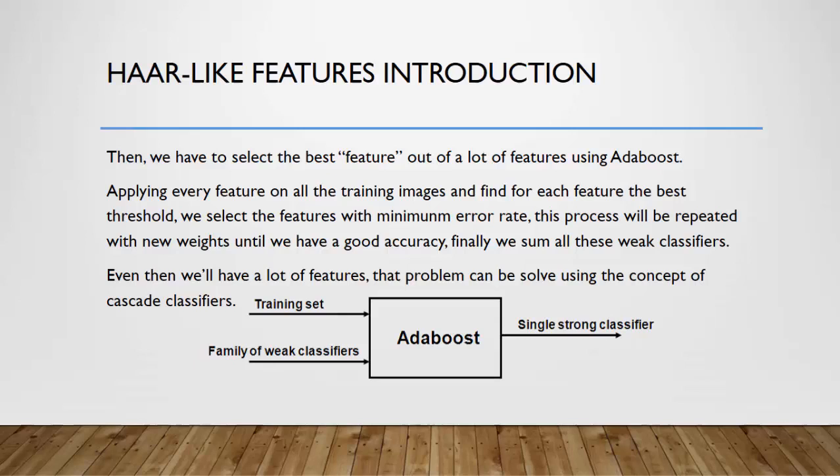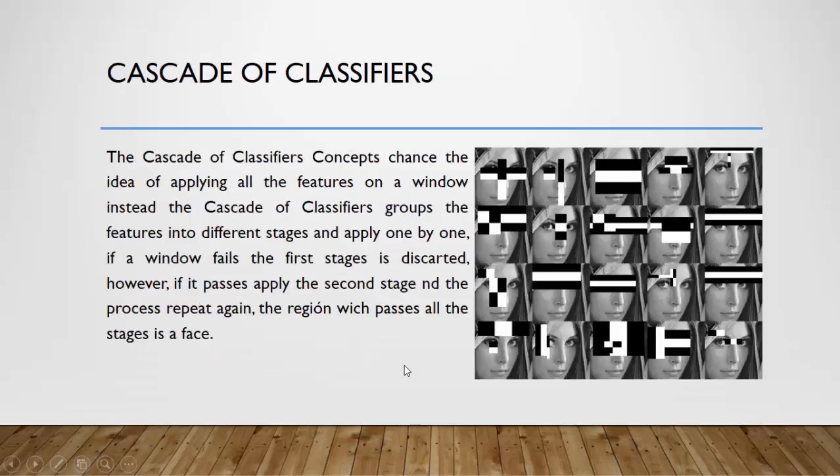That problem can be solved using the concept of cascade classifier. We have this magic box. For example, we have the training set and the family of weak classifiers. So the output of this box is a single strong classifier using AdaBoost. We will introduce the cascade of classifier concept. The cascade of classifier concept changed the idea of applying all of the features on a window. Instead, the cascade of classifier groups the features into different stages and applies one by one. If a window fails the first stage, it's discarded. However, if it passes, apply the second stage and the process repeats again and again. The region which passes all the stages is a face.